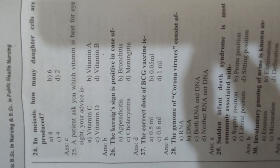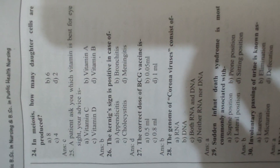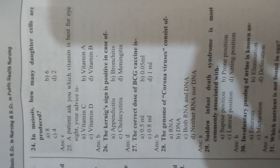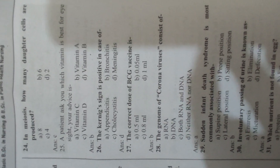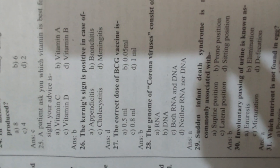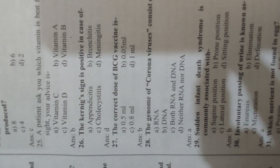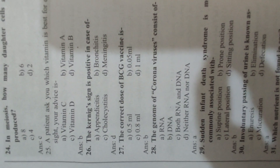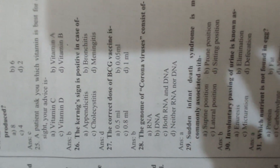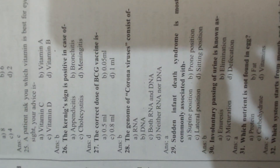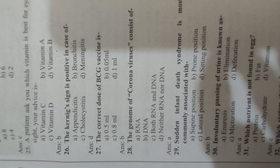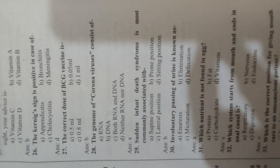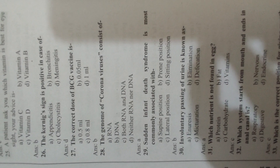Question 26: The Kernig's sign is positive in cases of Answer D, meningitis. Question 27: The correct dose of BCG vaccine is Answer B, 0.05 ml. Question 28: The genome of coronavirus consists of Answer A, RNA.